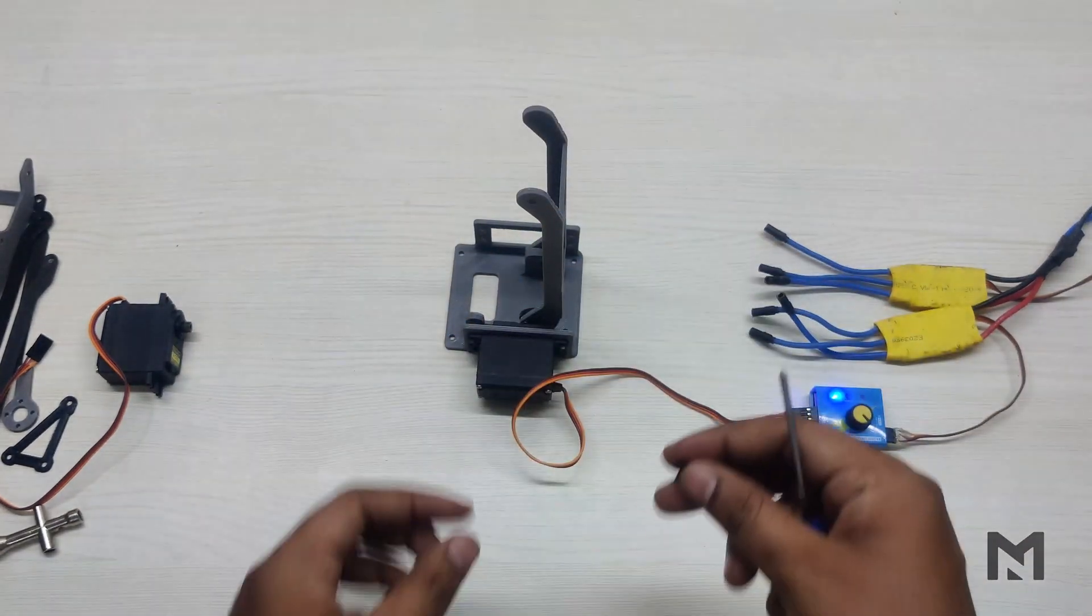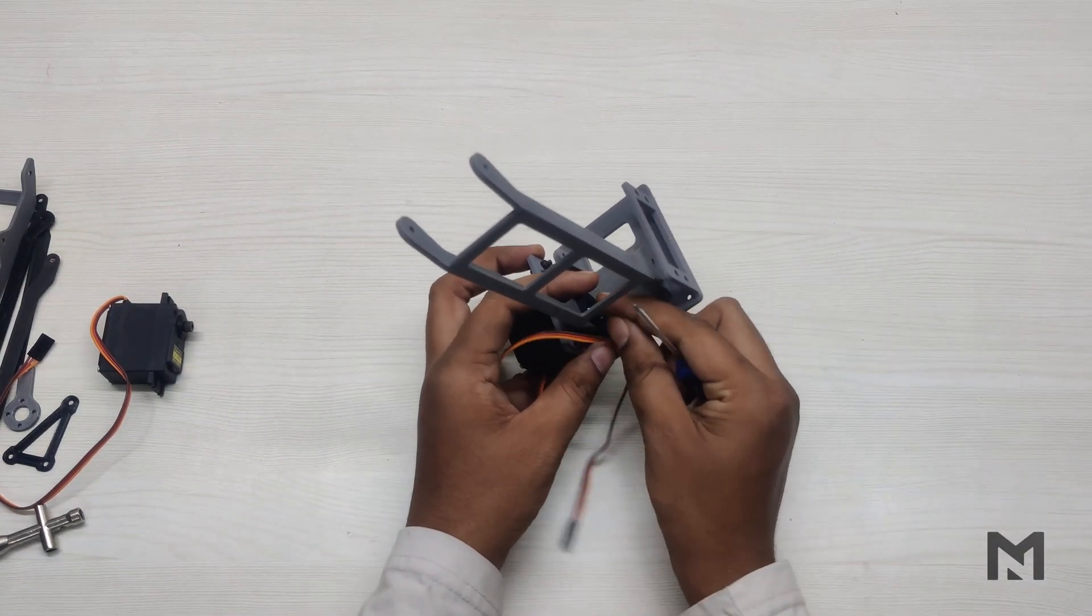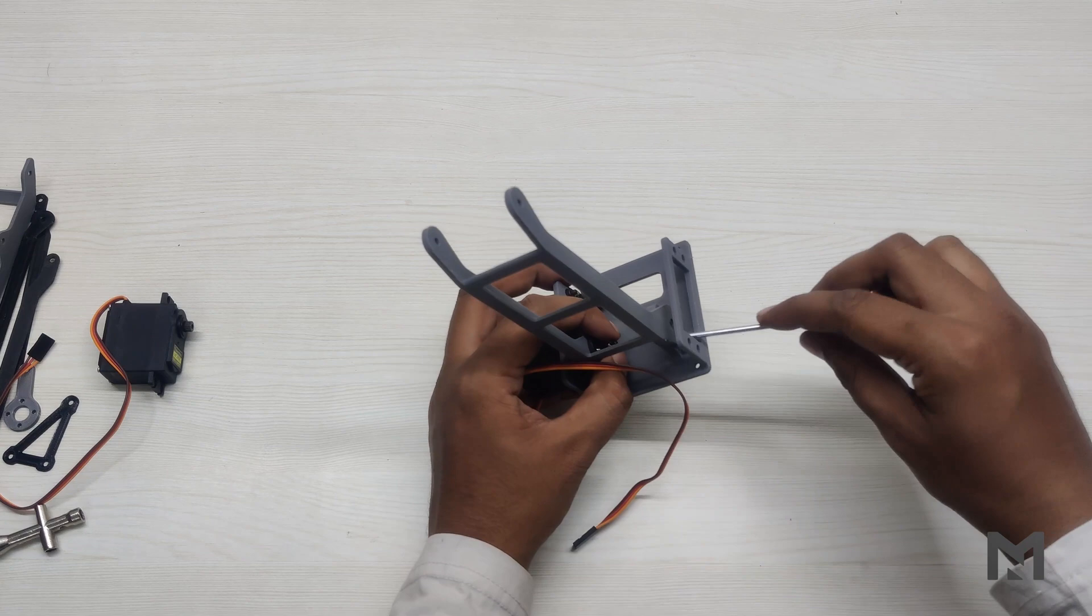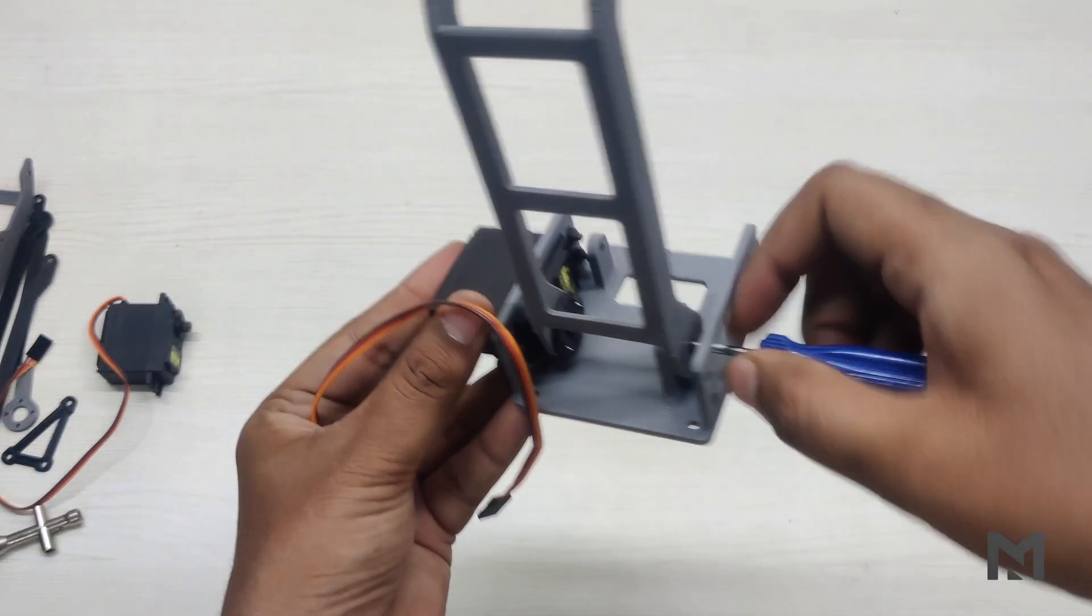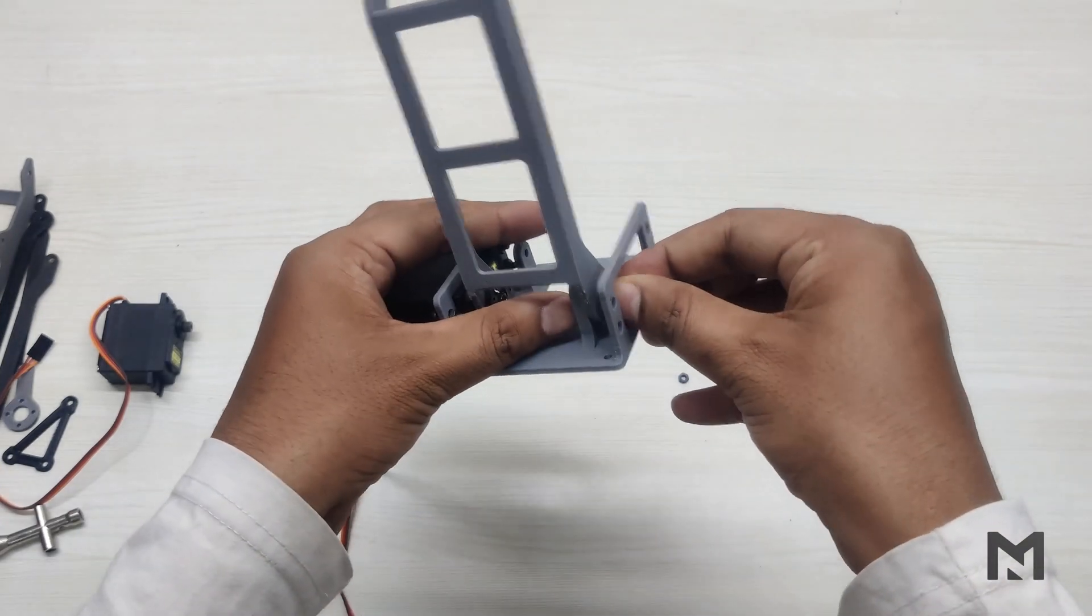Now comes the tricky part of attaching the servo arm screw. Place the screw in its position and then insert the screwdriver from the bearing hole and then tighten it. Then insert the M3 screw into the second inch.